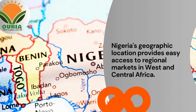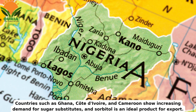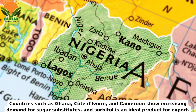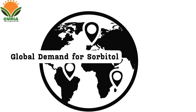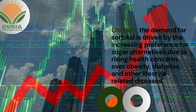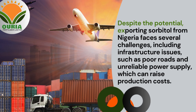Export market potential: Nigeria's geographic location provides easy access to regional markets in West and Central Africa. Countries such as Ghana, Côte d'Ivoire, and Cameroon show increasing demand for sugar substitutes, and sorbitol is an ideal product for export. Globally, the demand for sorbitol is driven by the increasing preference for sugar alternatives due to rising health concerns over obesity, diabetes, and other lifestyle-related diseases.